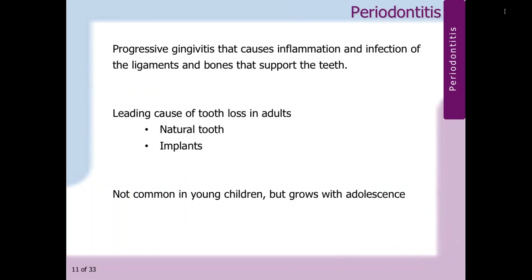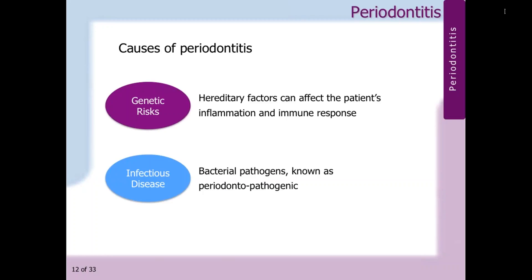Periodontitis is a periodontal disease where progressive gingivitis causes inflammation and infection of the ligaments and bones that support the teeth. This disease is the leading cause of tooth loss in adults. Tooth loss is not only limited to natural teeth, but it can occur with expensive dental implants as well. It is not so common in children, although the disease increases with adolescents. There are certain genetic risks that may predispose a patient to the disease, but it is also an infectious disease. Genetic risks are due to hereditary factors that affect the patient's inflammation and immune response, associated with a higher susceptibility to develop severe symptoms of periodontitis, with the possibility of losing a tooth or an implant during the maintenance period.